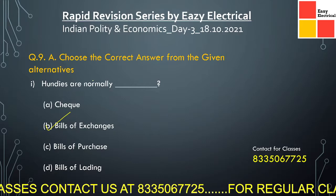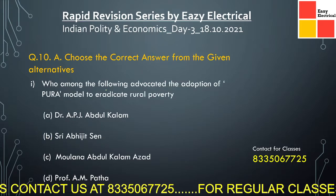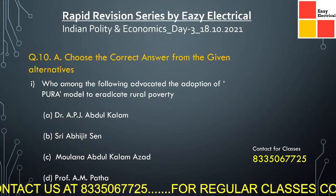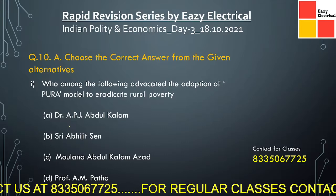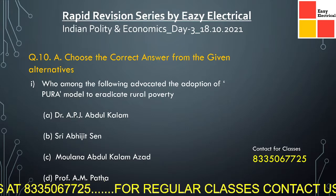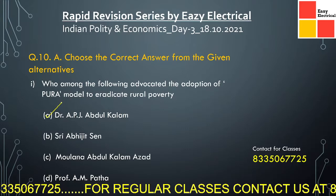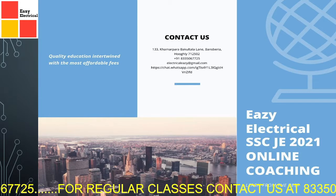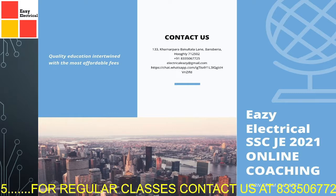This is frequently asked in SSC, so it is a very important question. Now coming to today's last question: who among the following advocated the adoption of the PURA model to eradicate rural poverty? You can comment in the comment box the full form of PURA model. The options are Dr. APJ Abdul Kalam, Abhijit Sen, Maulana Abul Kalam Azad, and Professor A.M. Pata. The correct answer is Dr. APJ Abdul Kalam. Thank you everyone for staying with us. If you have any doubts, send us a message at 8335067725 or mail us at electricaleasy@gmail.com. Thank you.